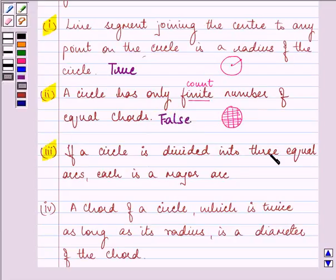The third part: if a circle is divided into three equal arcs, each is a major arc. Now let us divide the circle into three equal parts. Let's say A, B, C. A-B is an arc, B-C and C-A. But if you observe, each is not a major arc. Each is a minor arc. Therefore this is a false statement.